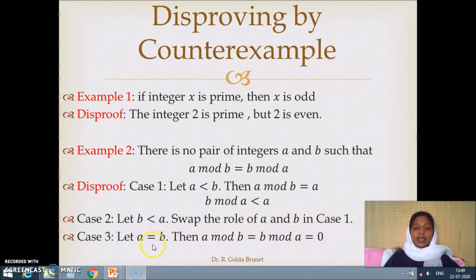then a mod b will be equal to b mod a and both will be equal to 0. Although the theorem is true for this case, we disprove for the general case where a less than b or b less than a, this theorem does not hold, thereby disproving the theorem.